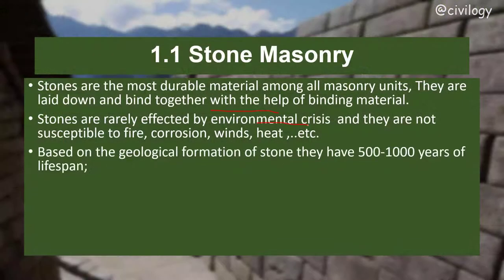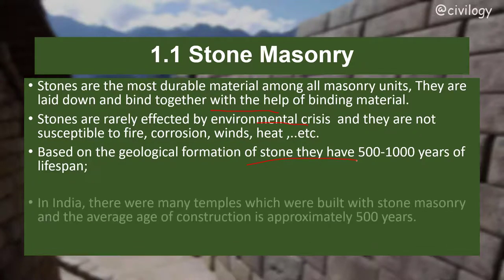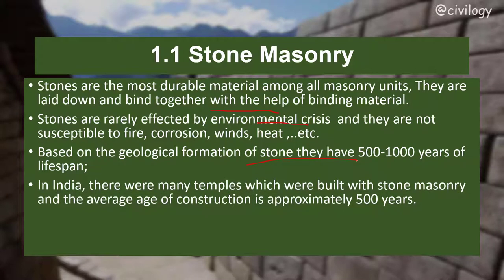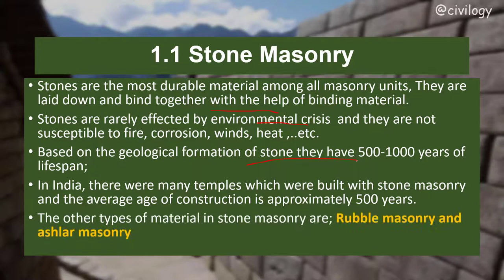Based on their geological formation, stones have a lifespan of 500,000 years. In India, there are many temples built with stone masonry, and the average age of those constructions is approximately 500 years. The subtypes within stone masonry are rubble masonry and ashlar masonry.